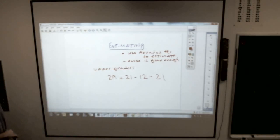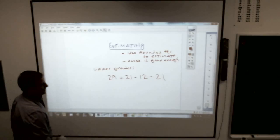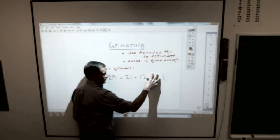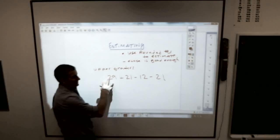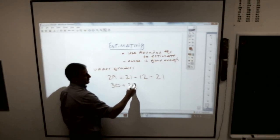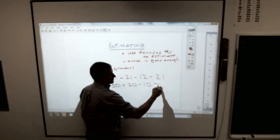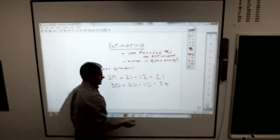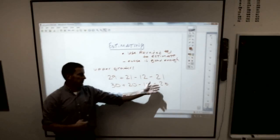Now, doing that math, if I was only asking you to estimate, you really don't want to sit down and do that. You would round all these numbers to compatible numbers, something that makes sense. Like 29, you'd say, okay, that's close to 30. 21, that's close to 20. 12 is close to 10. And 21 is close to 20. And it's pretty easy to add 30 plus 20 plus 10 plus 20.